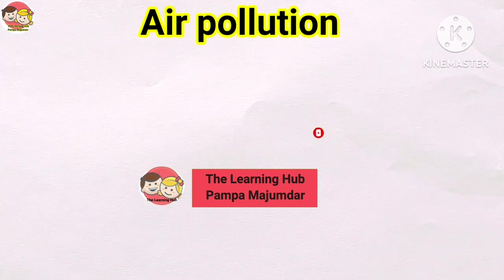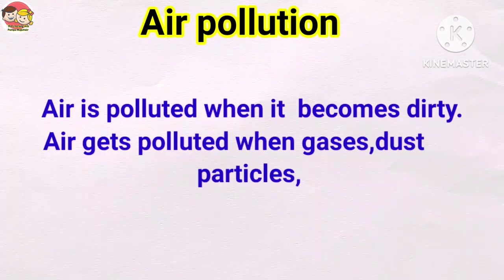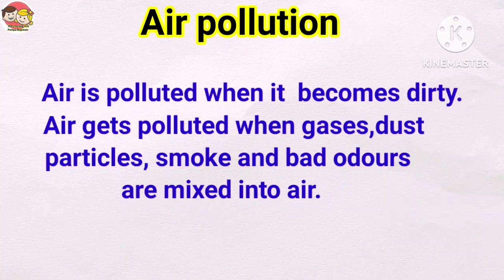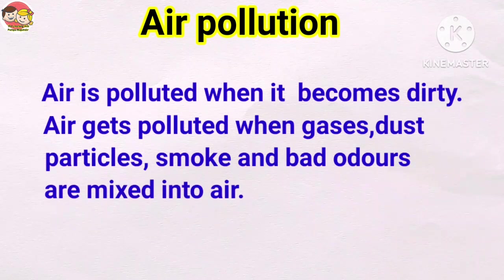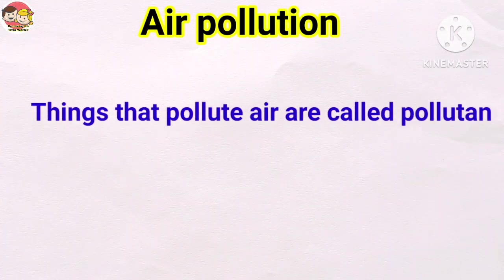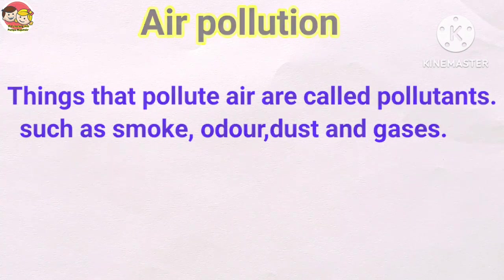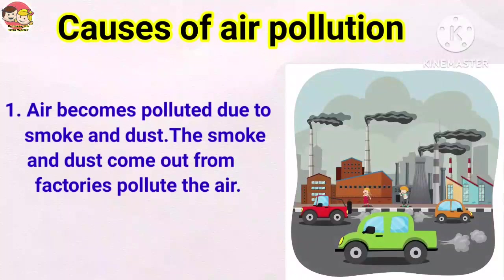Air pollution — what is air pollution and what are the causes? Air is polluted when it becomes dirty. Air gets polluted when gases, dust particles, smoke, and bad odors are mixed into it. Things that pollute air are called pollutants, such as smoke, odor, dust, and gases.